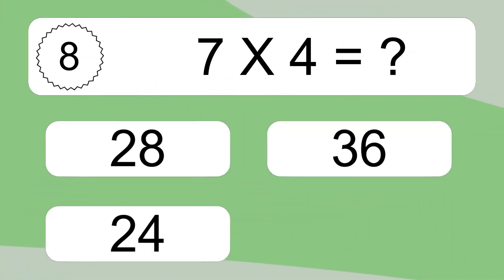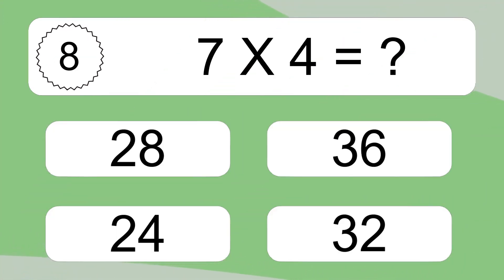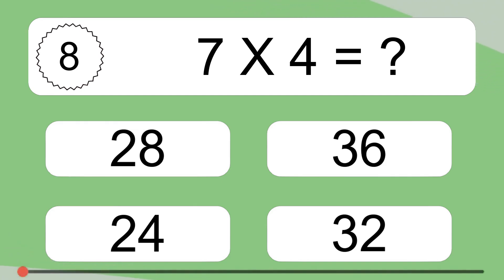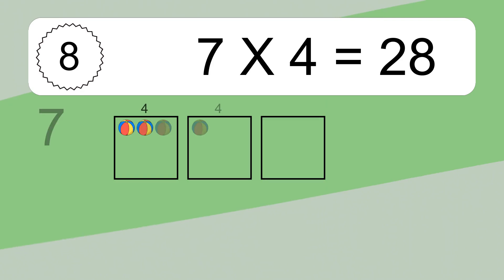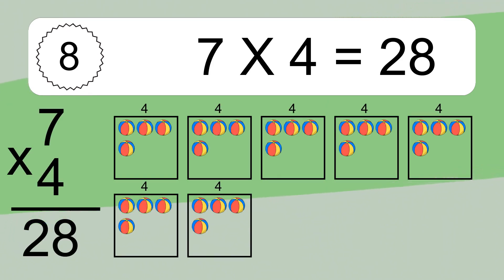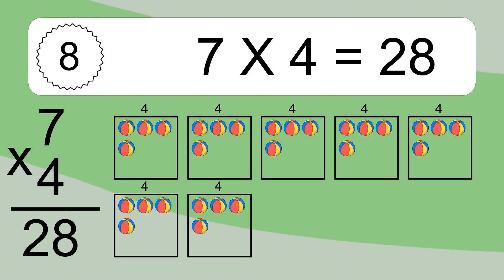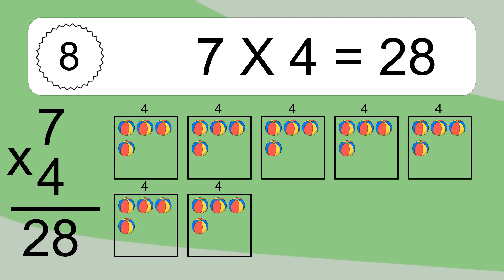7 times 4 equals what? 7 times 4 equals 28. We have 7 boxes and each box has 4 colorful balls inside. If you count all the balls in all the boxes together, you will have 7 times 4 balls. This equals 28 balls.